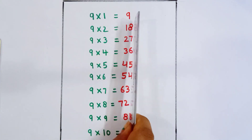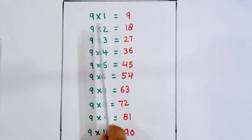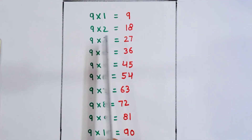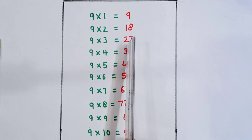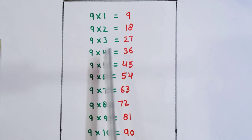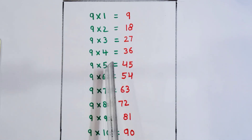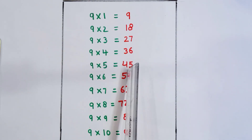9 1 is 9. 9 2 is 18. 9 3 is 27. 9 4 is 36. 9 5 is 45.